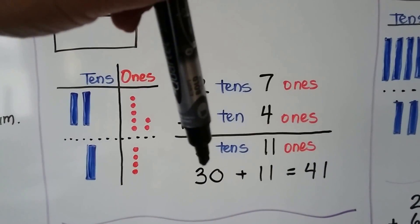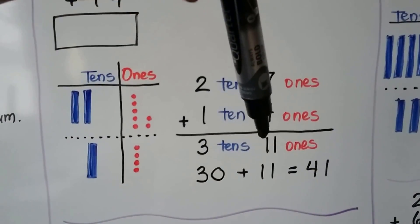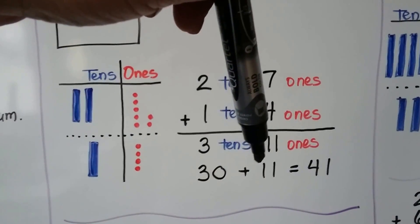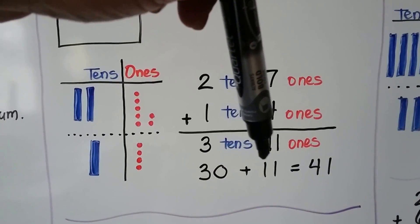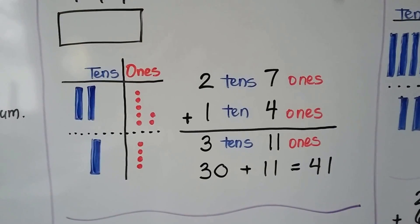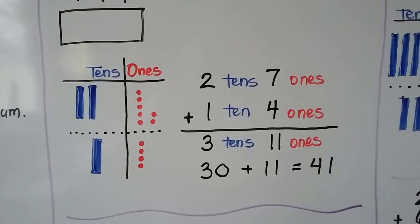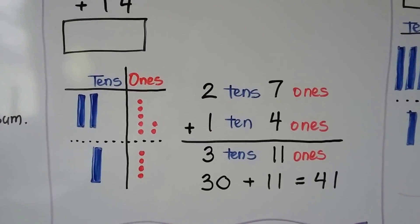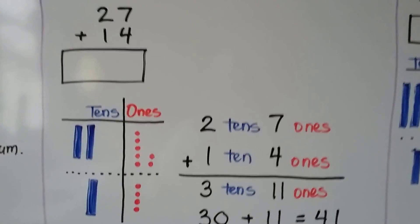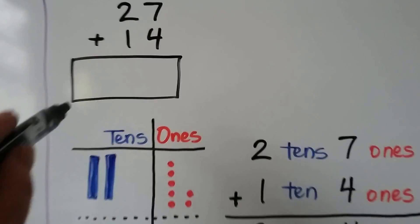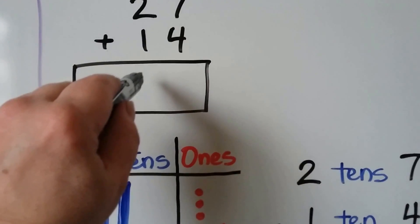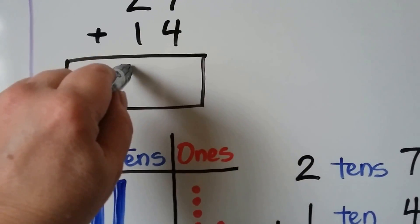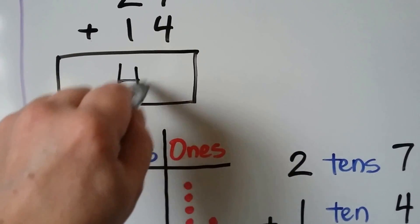Three tens are 30. We add it to our 11 ones. It equals 41. 27 plus 14 is equal to 41.